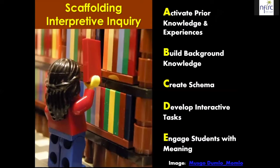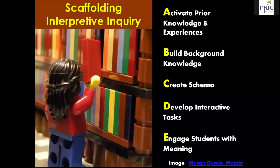We need to activate learners' prior knowledge and experiences with the topic they're going to encounter in the text. We need to build their background knowledge about things they might not know — so if my students are reading a text about Alaska and they live in Kansas, they probably don't have a lot of experience with the cultural or geographical features of Alaska, and that means there are a lot of things about the text they're not going to understand unless I give them experiences that help them build that knowledge before we read.